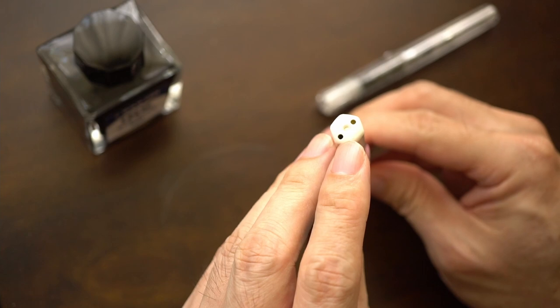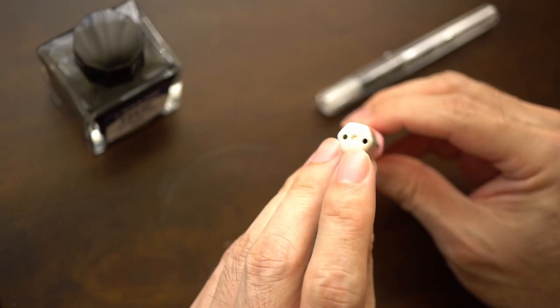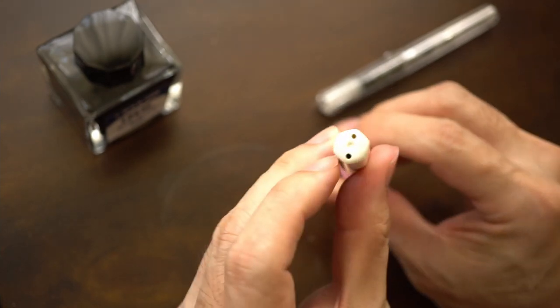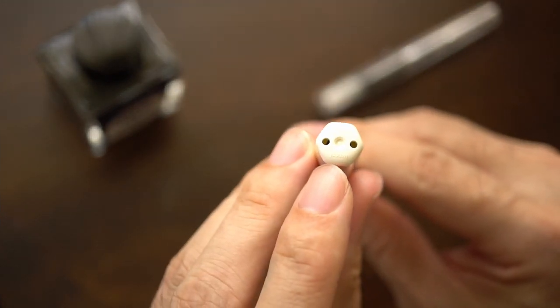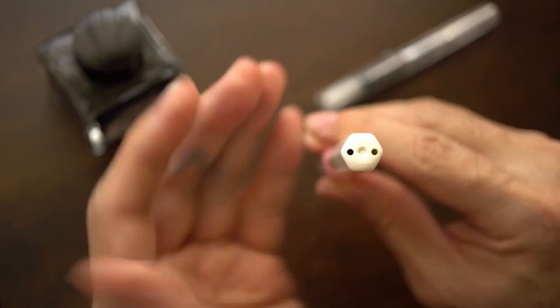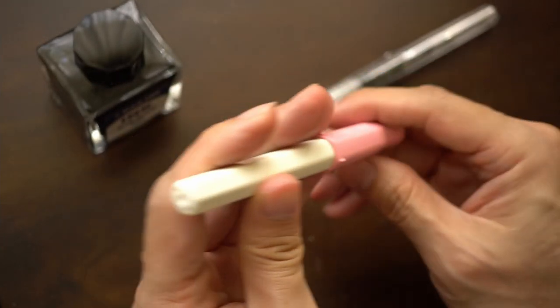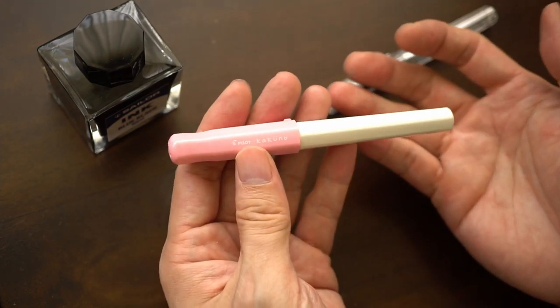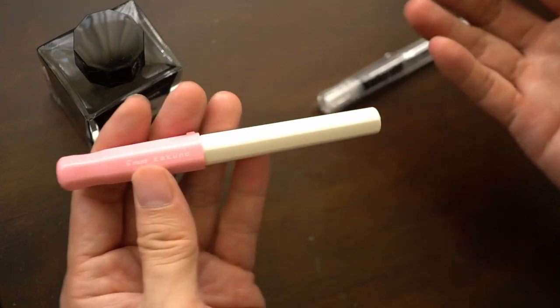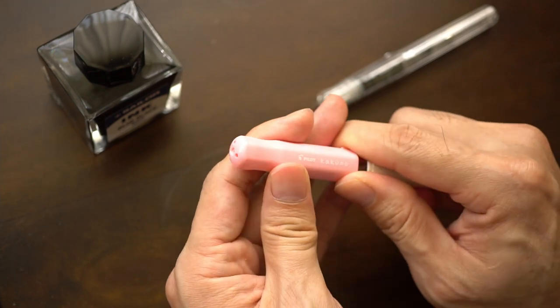On the other end of the pen, you have the end of the barrel which says down here Pilot Japan and it also has two holes down here. Apparently all these holes are to make this pen safe for children to use without them choking on bits and pieces of the pen.